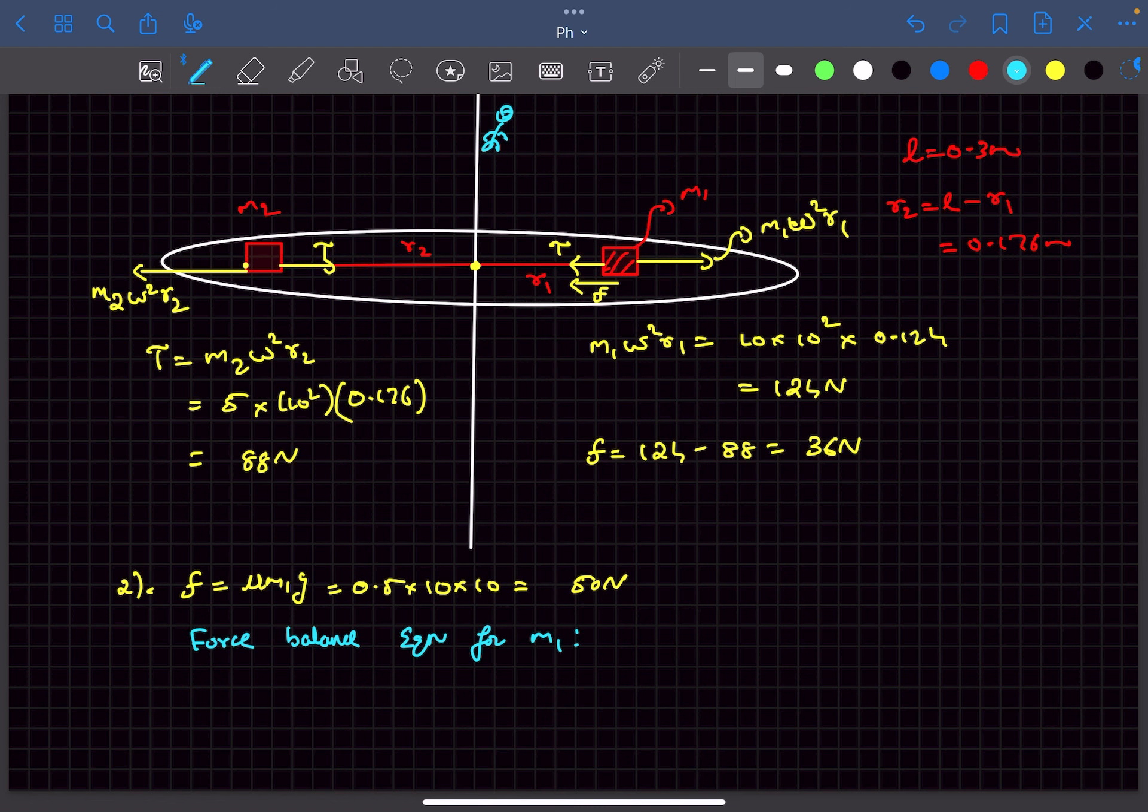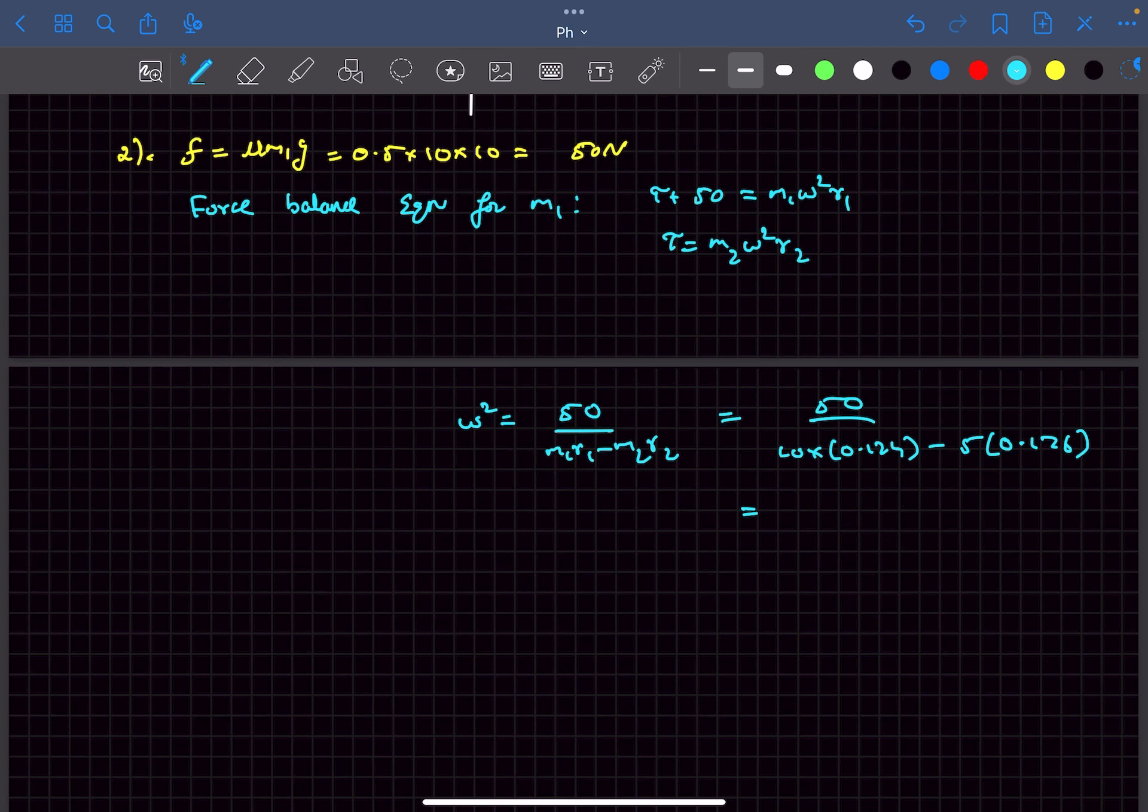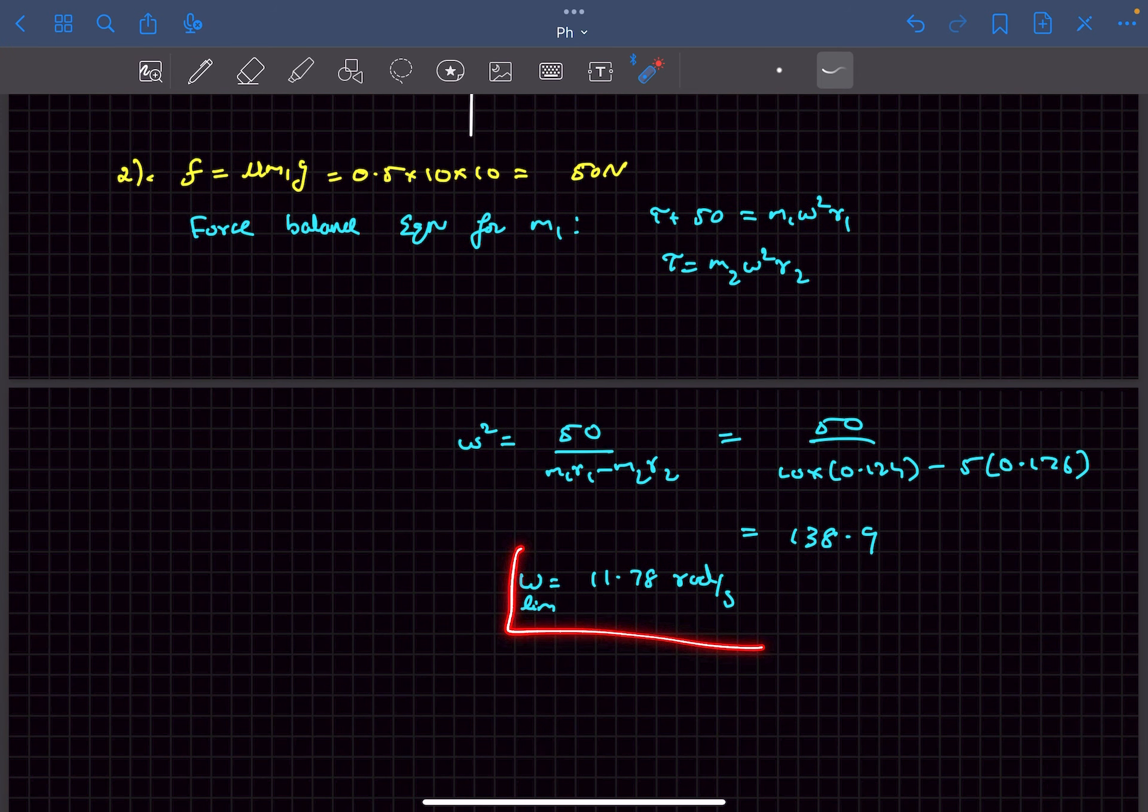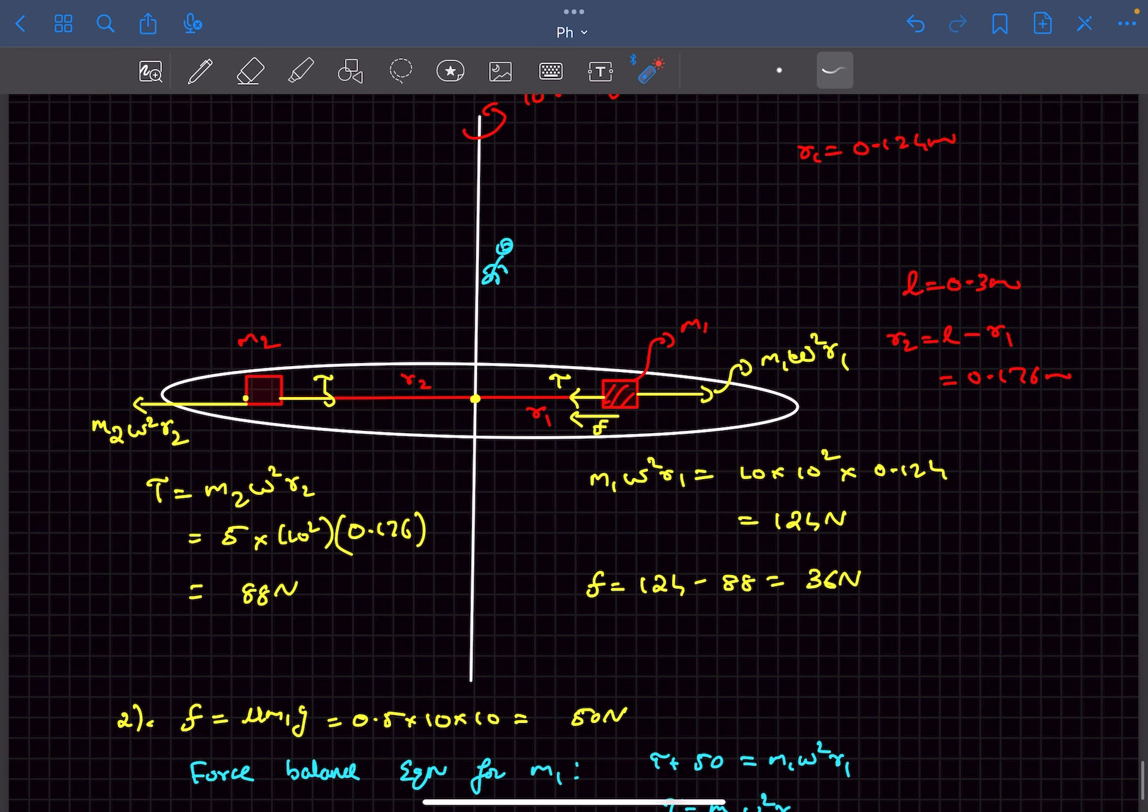So if we write the force balance equation for block m1 it will be T plus f which is 50 newtons equals m1 omega square r1. And if we write the force balance equation for block m2 we get the tension T as m2 omega square r2. So after calculation this comes out to be 138.9. So if you do the calculations you'll get the limiting value of omega as 11.78 radians per second. So what happens after 11.78 radians per second is that this friction will reach its limiting value and it won't be enough anymore to prevent slipping.